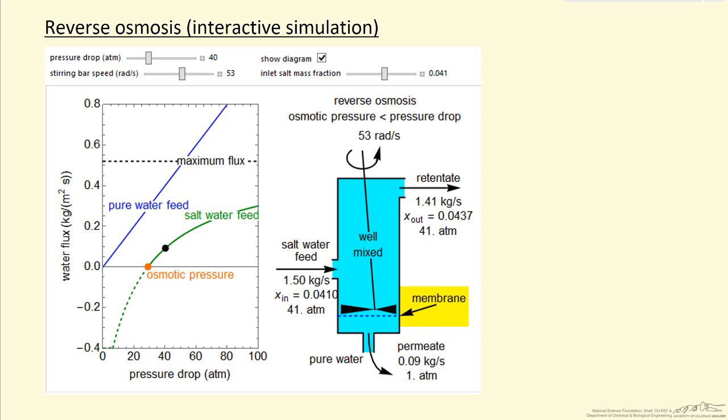The membrane is only permeable to water, not to salt. We feed salt water into the membrane, and the objective is to get pure water out. As a result, we concentrate salt water, leaving with a higher concentration. The reason this works is because we have a large pressure difference—in this case, 40 atmospheres. We have to have a pressure higher than this osmotic pressure to get flow through the membrane.